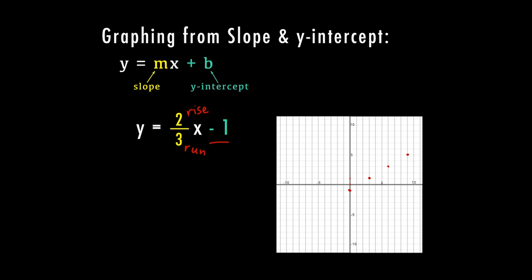I can even go back to the y-intercept and work backwards and count down 2 and left 3, and I'm going to end up with another point that can continue on this same line. Once you have enough points, you can go ahead and connect the dots to form your line.